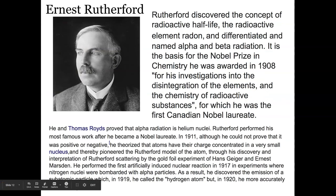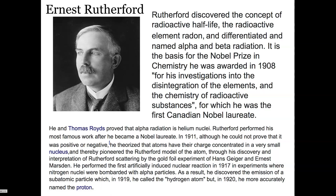Ernest Rutherford won a Nobel Prize in 1908 for discovering the first types of radiation: alpha and beta. Alpha for the first type, beta for the second — A and B in the Greek alphabet. We know he proved that alpha radiation are helium nuclei. He performed the most famous work related to the gold foil experiment with Marsden and Geiger, and he performed the first artificially induced nuclear reaction, where nitrogen nuclei were bombarded with alpha particles.